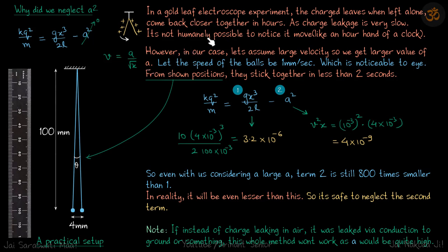They move very slow. However, in our case, let's assume large velocity, so we get a larger value of A. We want to neglect a square here. Let's assume that A is very high. Let's assume that for a moment.